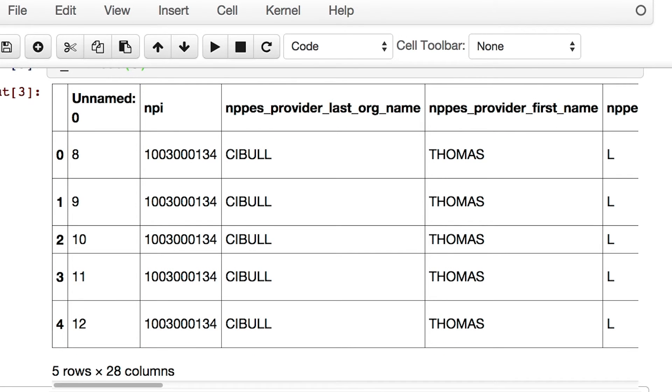If you scroll further down, you will see it shows five rows and 28 columns. The 28 columns indicate there are 28 vectors in the pandas data frame.